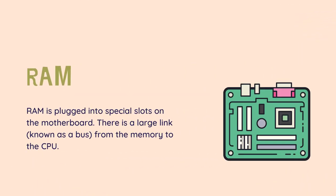RAM is plugged into special slots on the motherboard. There is a large link, known as a bus, from the memory to the CPU. Each motherboard has a fixed number of slots for RAM, often 2 or 4 slots. Only certain types and sizes of RAM can be used with any motherboard, so before buying, check your motherboard details.